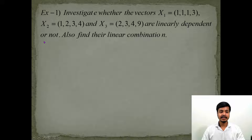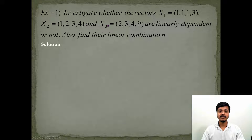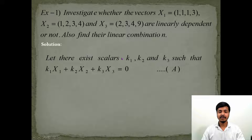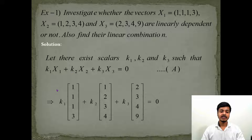Example 1: Investigate whether the vectors x1, x2, x3 are linearly dependent or not, and also find their linear combination. Step 1: write down the given vectors. Step 2: write down the linear combination. Since there are three vectors, we need three scalars k1, k2, k3 such that the linear combination equals zero. Substitute the values of x1, x2, and x3 to get the equation.